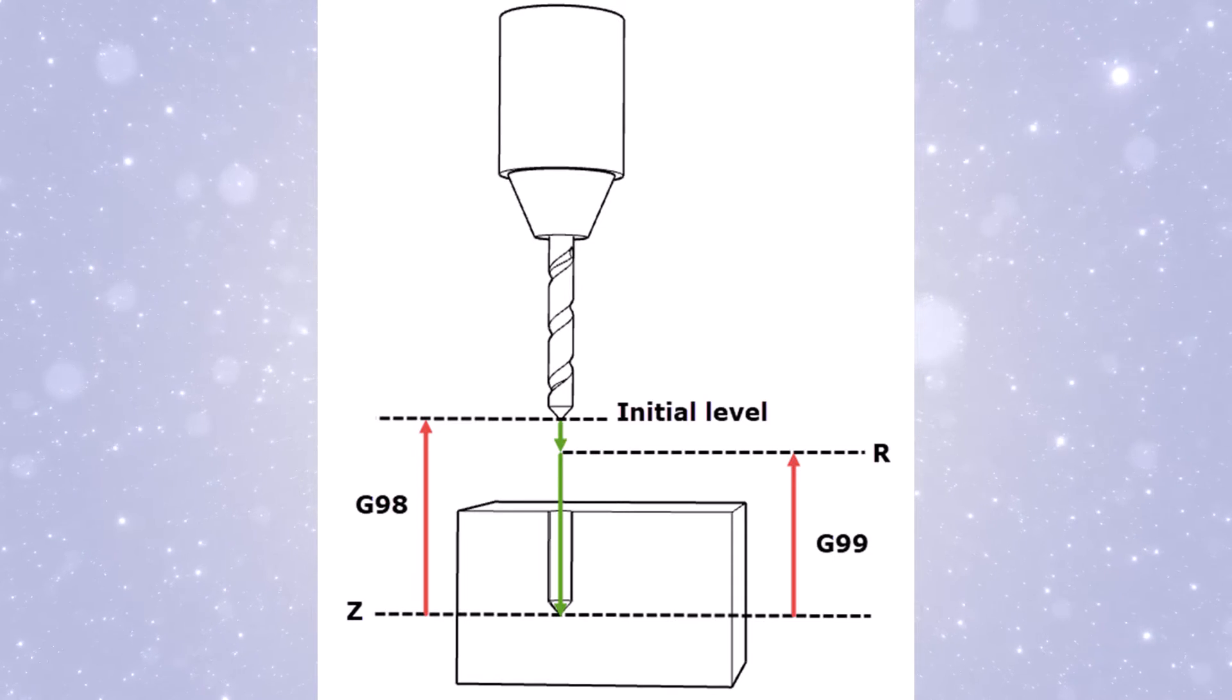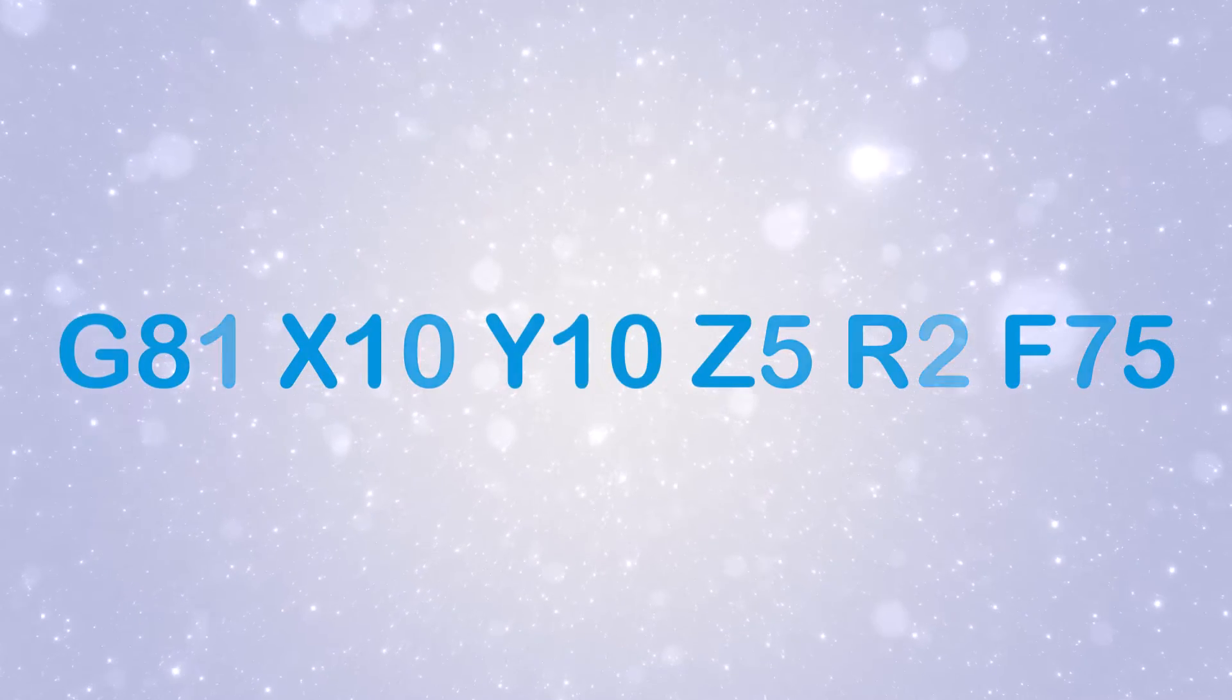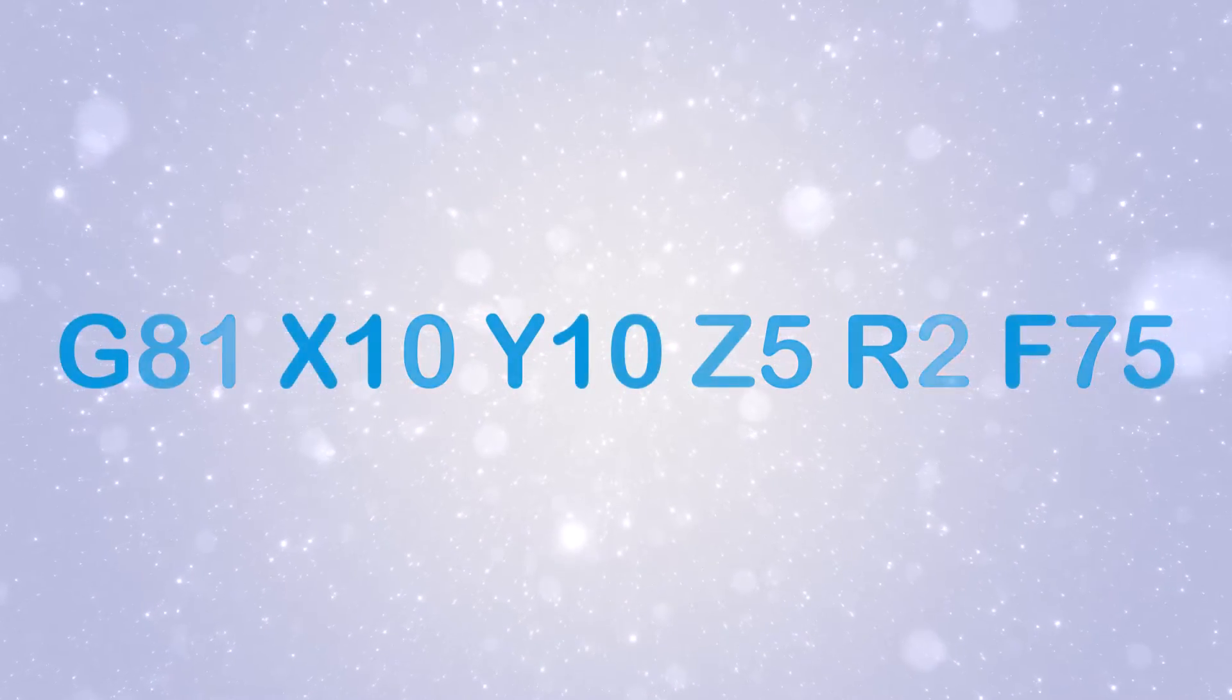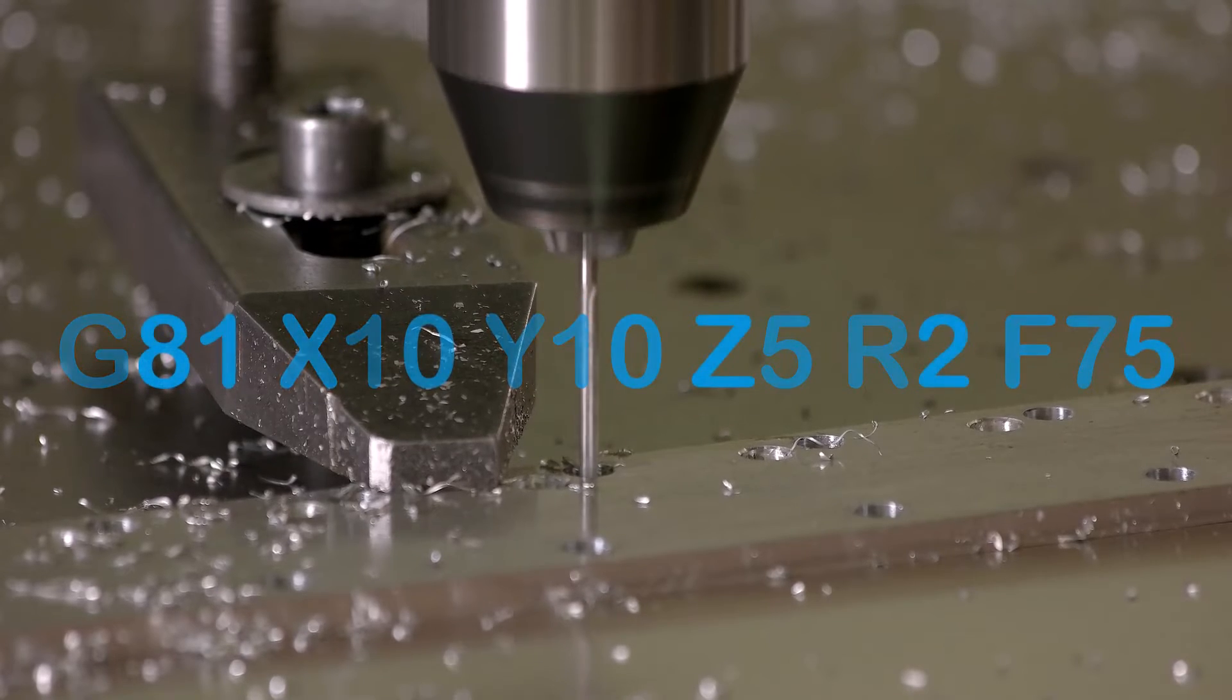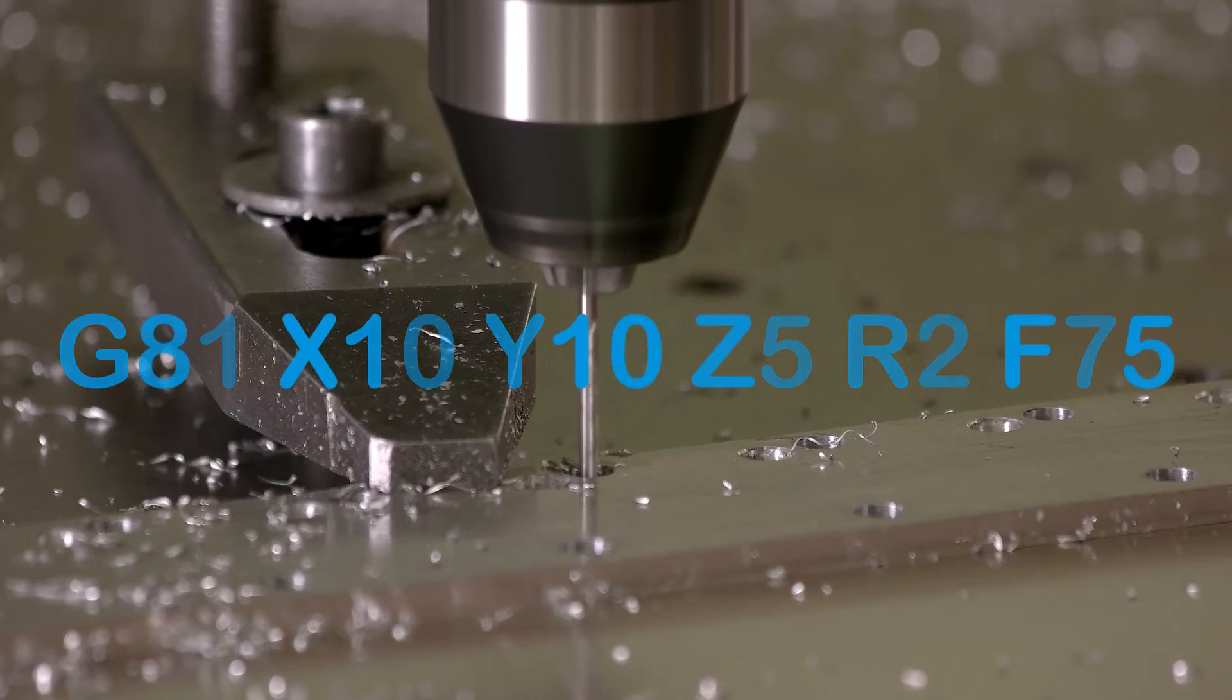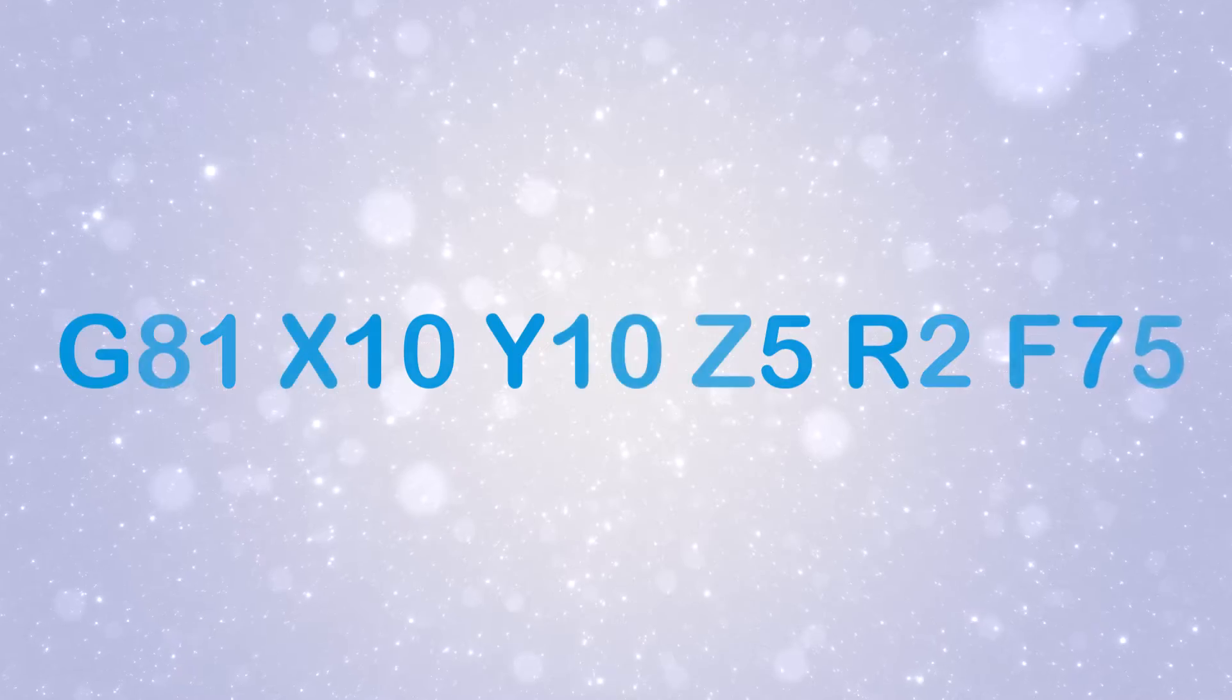Let's consider an example. The G-code G81X10Y10Z5R2F75 initiates a drilling cycle. The tool moves to the point X10, Y10, plunges to a depth of Z5 at a feed rate of 75, retracts to a height of R2, and then moves to the next position.